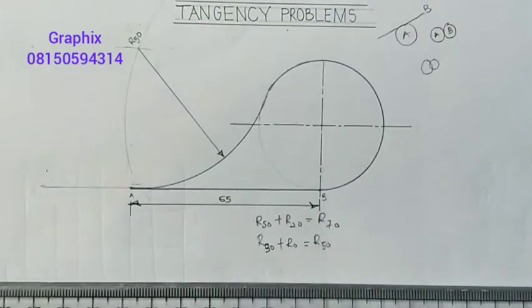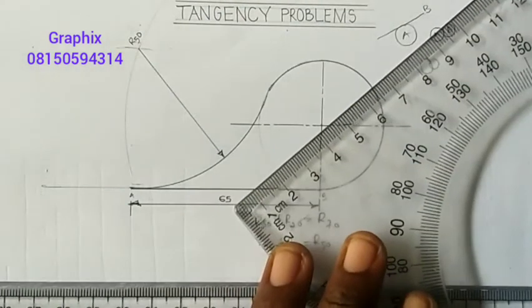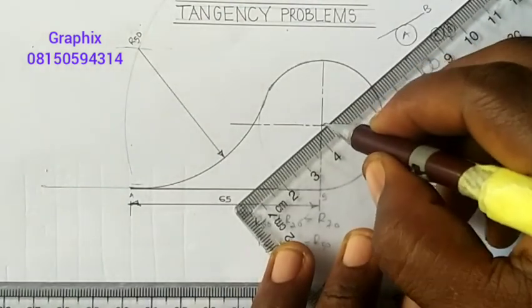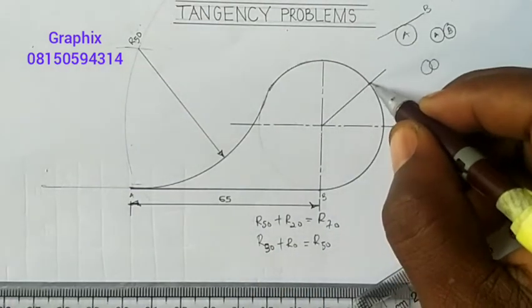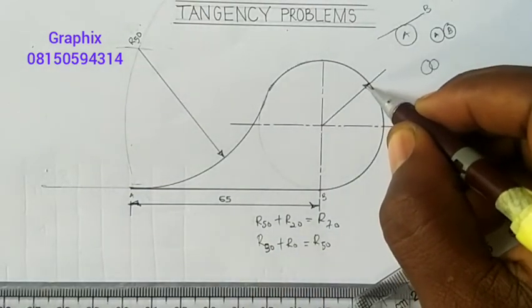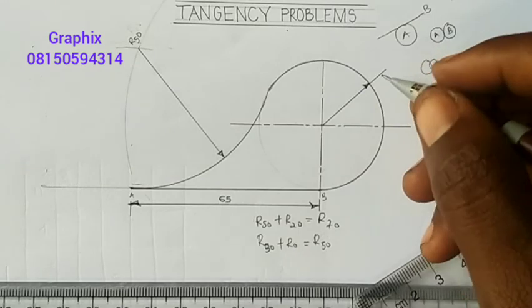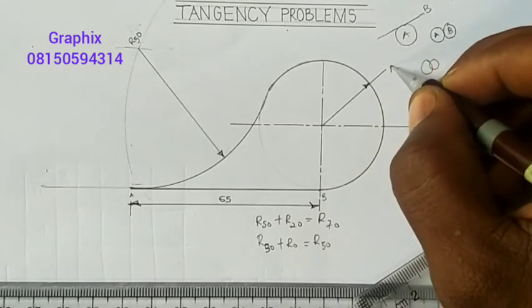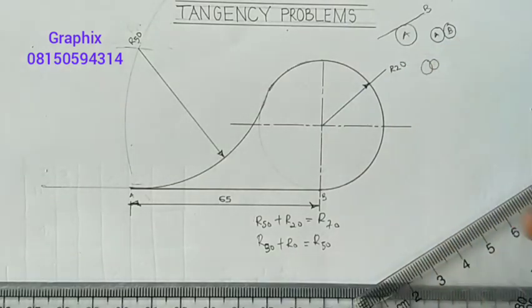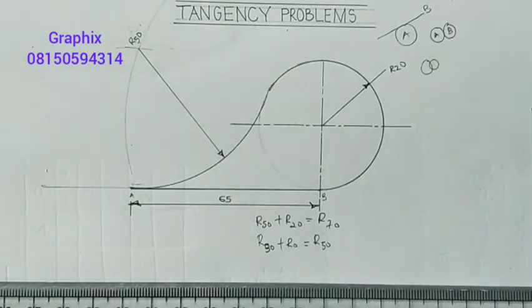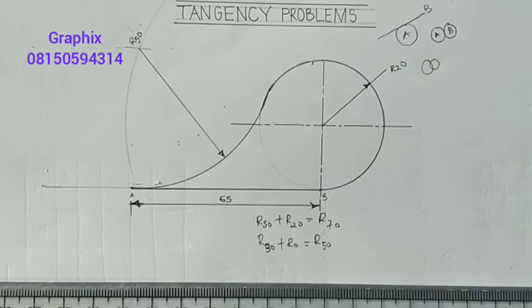Then the angle from here to here, the radius, that is R20. So this is the tangent here. Let's draw the outline and complete the edges.